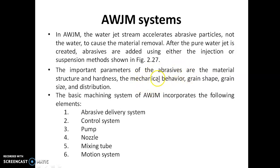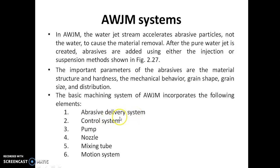These are the important parameters of an abrasive material. The basic machining of an abrasive water jet machining system consists of these elements: one is the abrasive delivery system. The delivery system has two types — injection and suspension, which we will discuss later. We also have a control system, a pump to pressurize the fluid, a nozzle which develops high velocity, and a mixing tube.